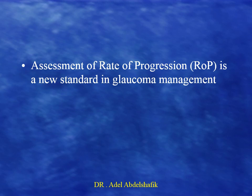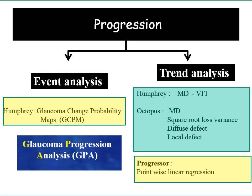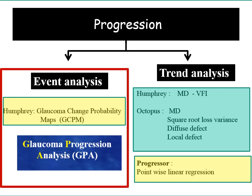Assessment of the rate of progression is now a new standard in glaucoma management. Progression may be assessed as an event — yes or no, is it present or not — or as a trend, looking for a continuous change over time and whether it is steep or slight. Today we have two ways to check for progression: event analysis and trend analysis. These are the points I will discuss in the next part of the presentation.